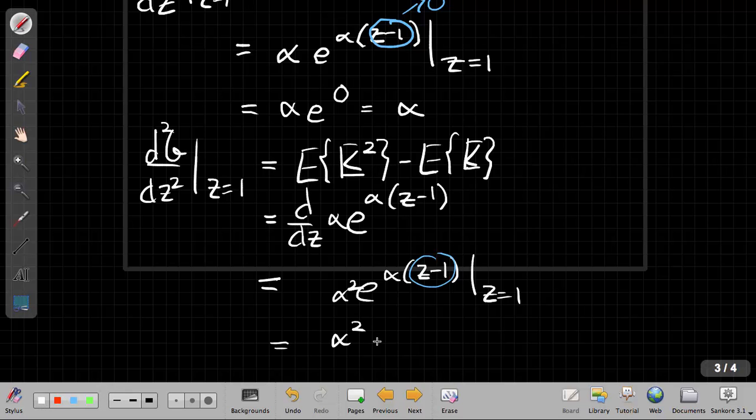So alpha squared, but this is equal to what I had up here, equal to these terms here. So I need to solve this in the other direction. Let me make a new page before I go too far down. Solving this in the other direction, I'm going to say if I want to find the second moment.